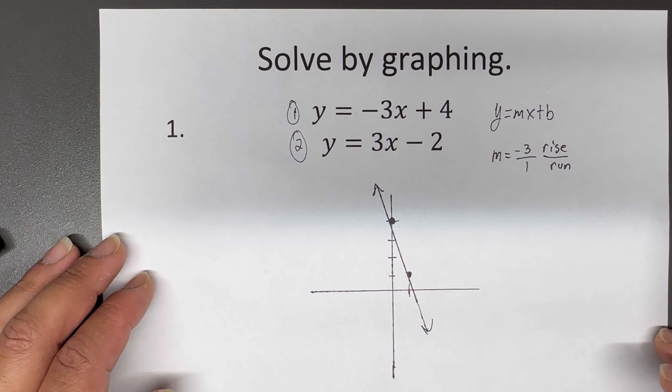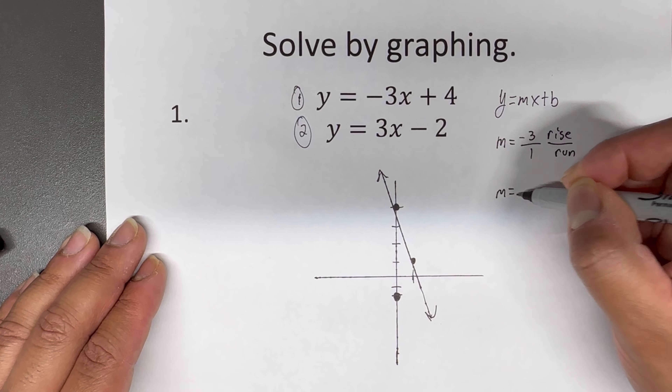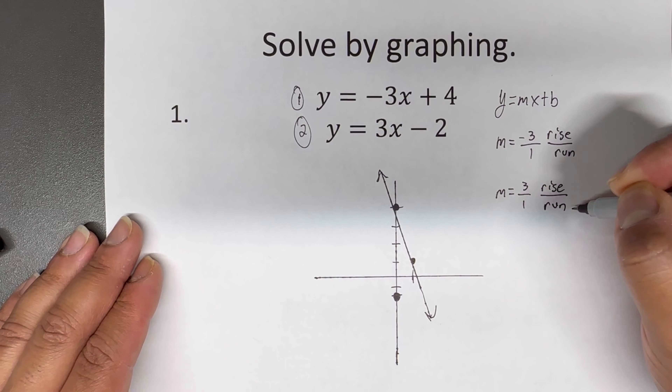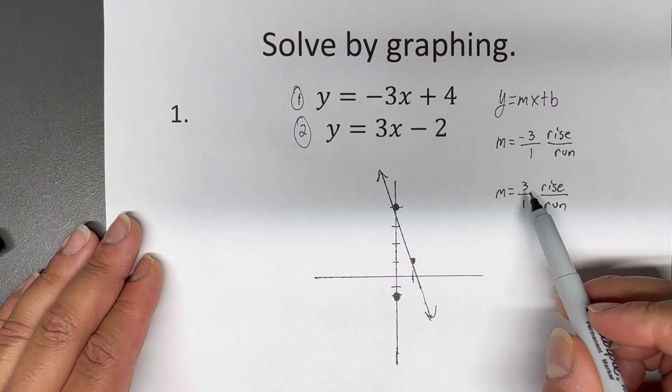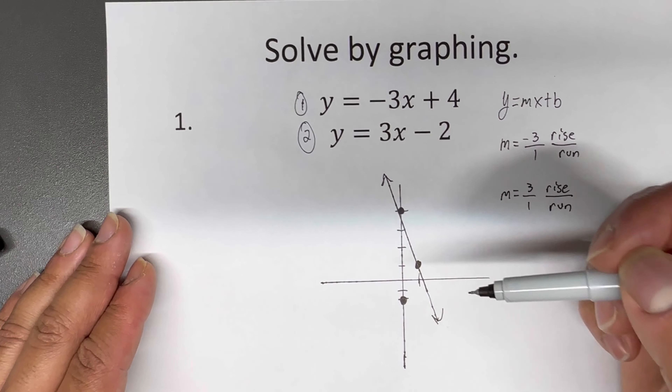The Y-intercept of this thing is at negative two, so we're going to go down two and put our dot there. Now the M tells us how steep this graph is — it says three, so I'm going to put it over one. That's rise over run — since it's positive three, I'm going to go up three and to the right one. So this line is going to look something like this.